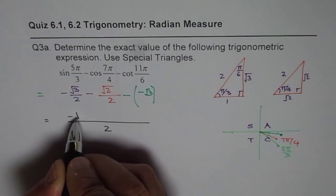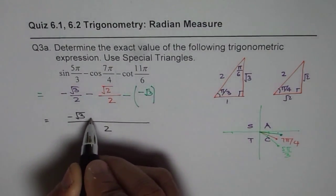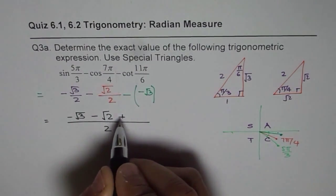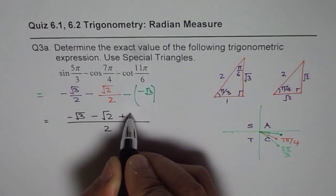So, we have -√3, we have -√2 and that becomes plus then 2 times √3.